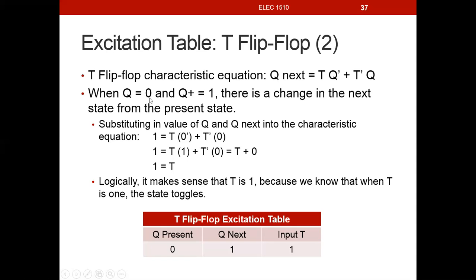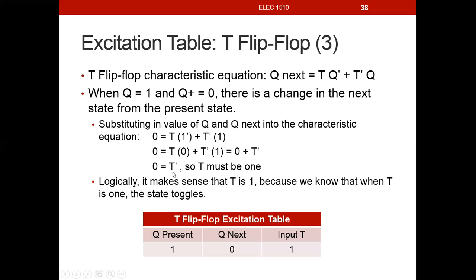When Q present is 0 and Q next is 1, substituting in: T·1 gives T, and T̄·0 gives 0, so 1 = T. T must be 1, which makes sense — present and next states are different, so the toggle flip-flop must have T = 1 to change values. Similarly, when Q present is 1 and Q next is 0: T·0 gives 0, and T̄·1 gives T̄, so 0 = T̄, meaning T must be 1. Again the states are different and we toggle, requiring T = 1.